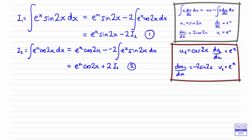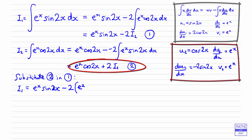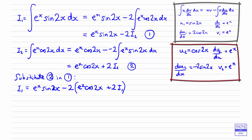Because we want to find i1, we're substituting equation 2 into equation 1. From equation 1 we have i1 equals e^x sine 2x minus 2 times i2. Now substituting in i2, which equals e^x cos 2x plus 2i1, we now only have one unknown — i1 — which is what we're trying to find. We just need to multiply out the brackets and collect all the i1 terms onto one side.